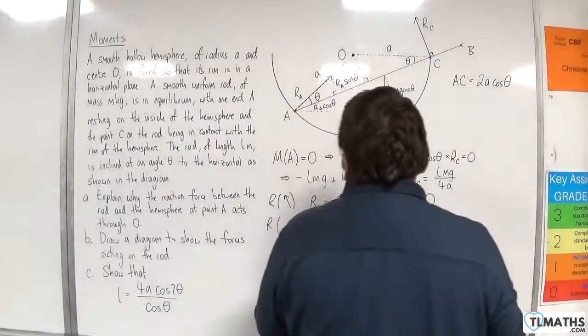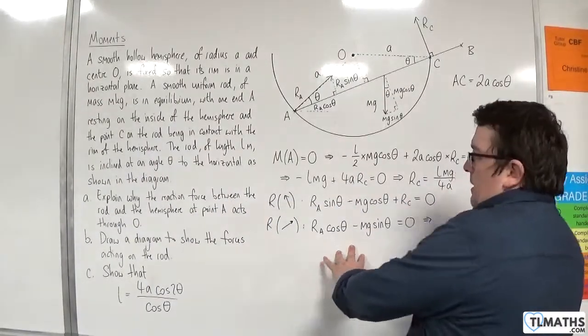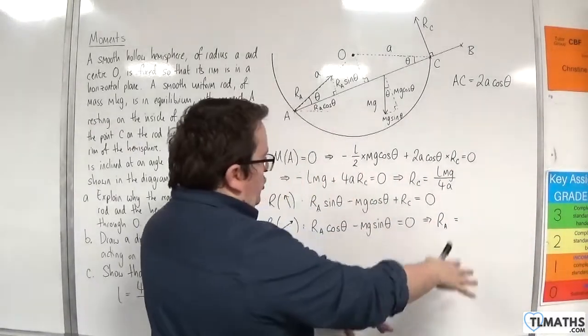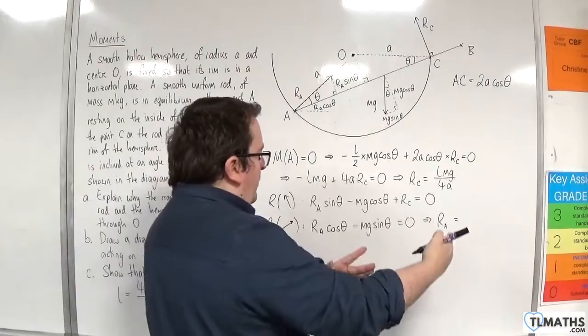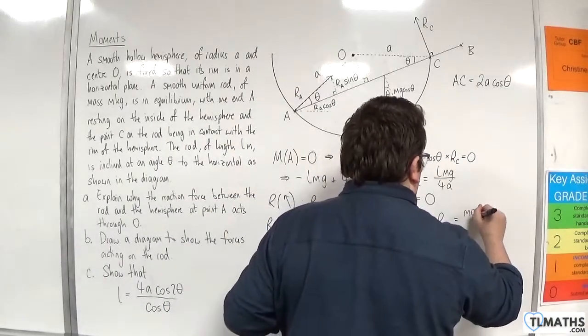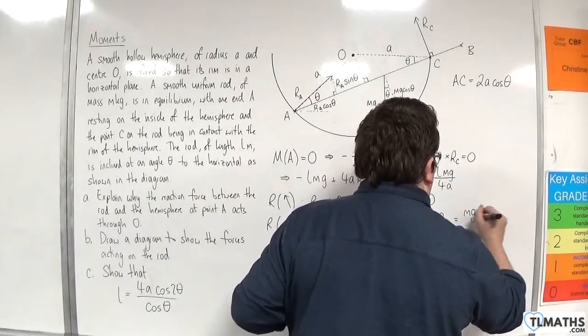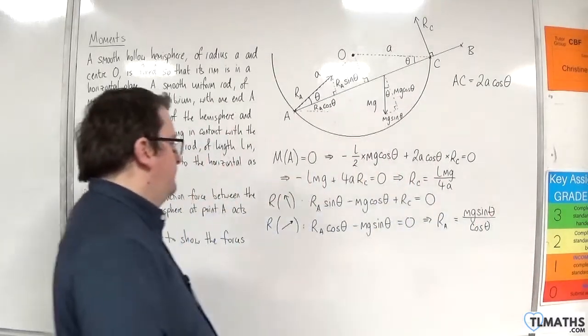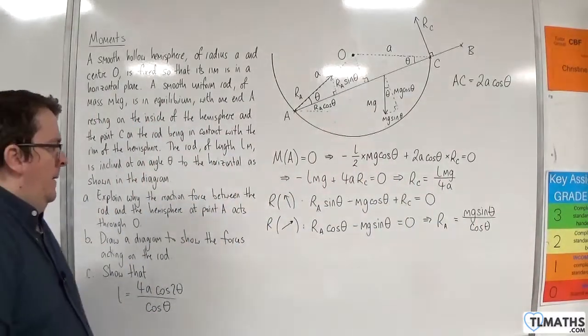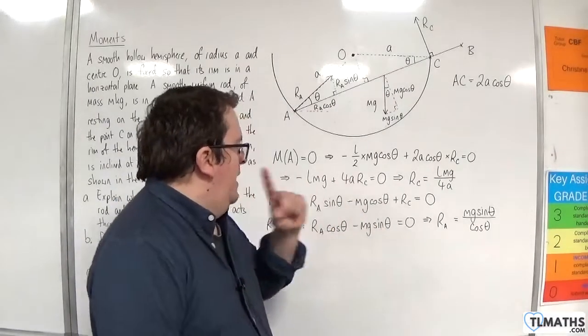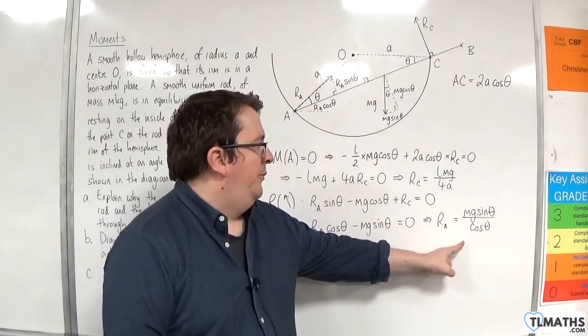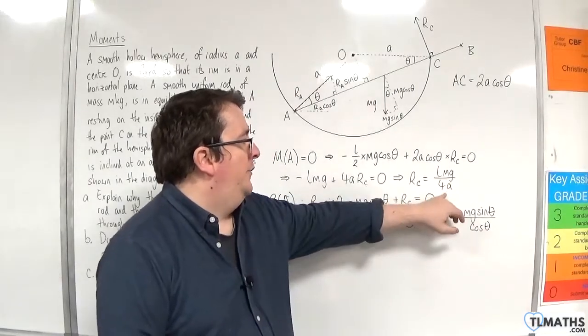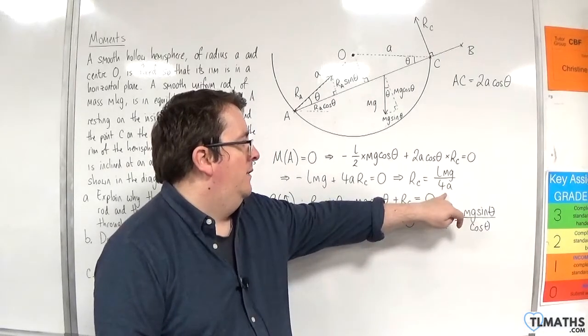So that will allow me to rearrange to get R A. So R A is going to be equal to, add the M G sine theta to both sides, divide through by cosine theta. So M G sine theta over cosine theta. So now I've got R A in terms of sine theta and cosine theta and M G.